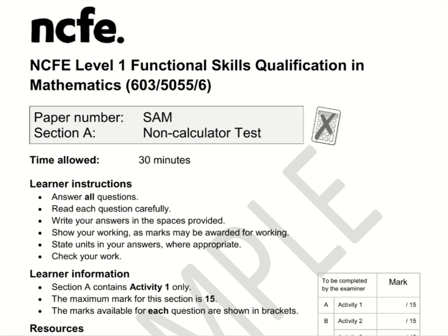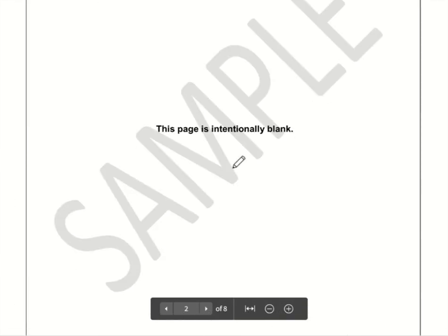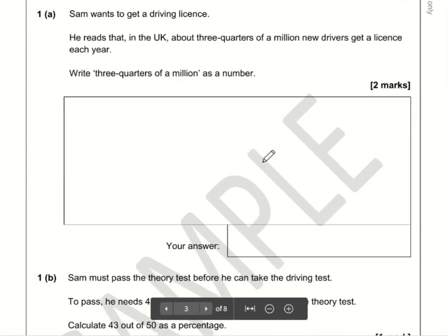Here are the video solutions for NCFE Functional Skills Maths Level One. This is Section A, which is the non-calculator section, and this is their sample paper. So let's take a look at question number one.